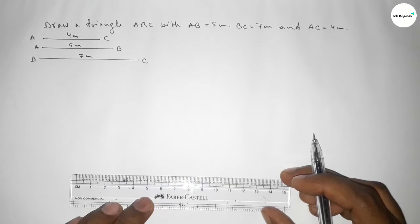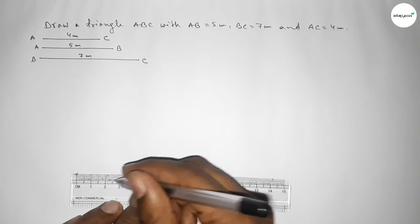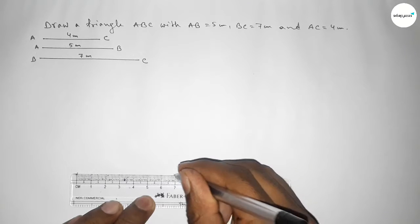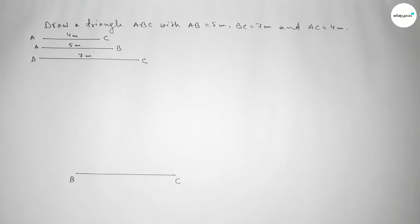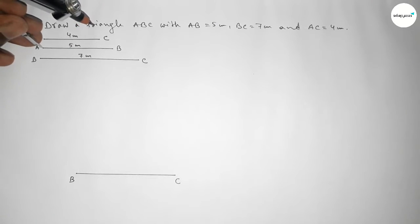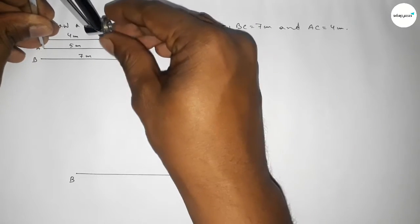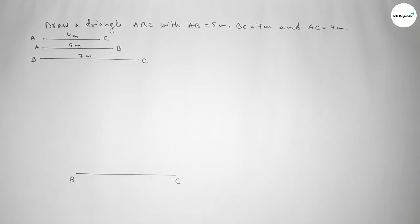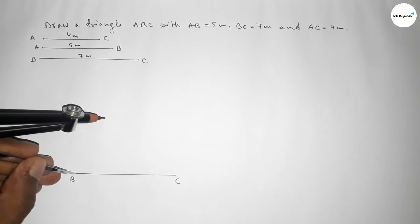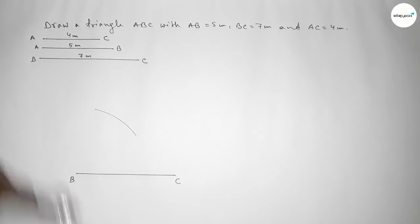First we draw a line of length 7 centimeter, taking point B here and point C here. Now taking the length AB equal to 5 centimeter using a compass, putting the compass on point B and drawing an arc.